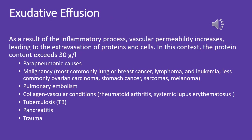Exudative effusion results from an inflammatory process where vascular permeability increases, leading to extravasation of proteins and cells. The protein content exceeds 30 g/dL. Causes include parapneumonic effusion, malignancy — most commonly lung or breast cancer, lymphoma, and leukemia, less commonly ovarian carcinoma, stomach cancer, sarcomas, and melanoma — pulmonary embolism, collagen vascular conditions such as rheumatoid arthritis and systemic lupus erythematosus, tuberculosis, pancreatitis, and trauma.